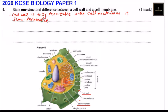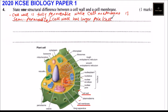We can also say the cell wall has larger pores, while the cell membrane has smaller pores. That is one structural difference.